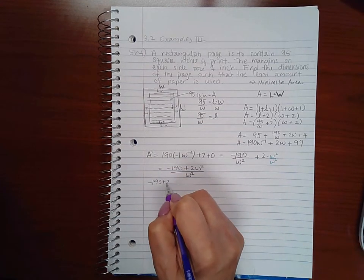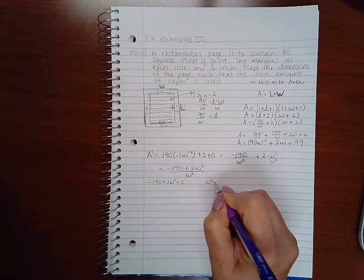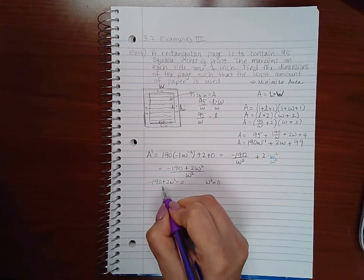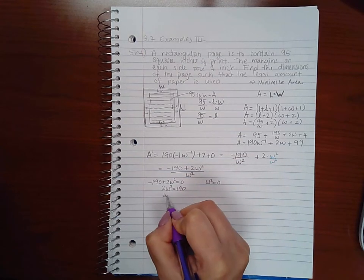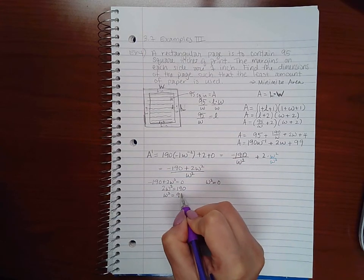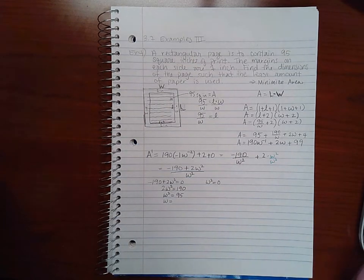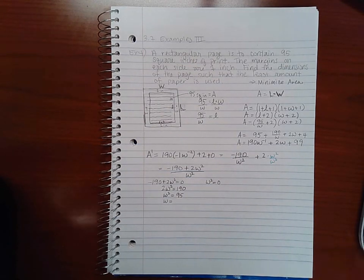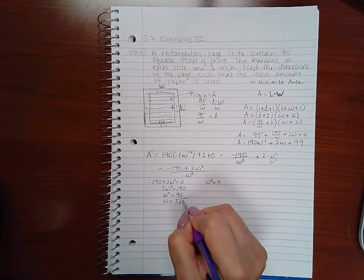So if I set my numerator equal to 0, I can add 190 to both sides. I can divide by 2 on both sides. I can take the square root on both sides, and so I get plus or minus square root of 95.